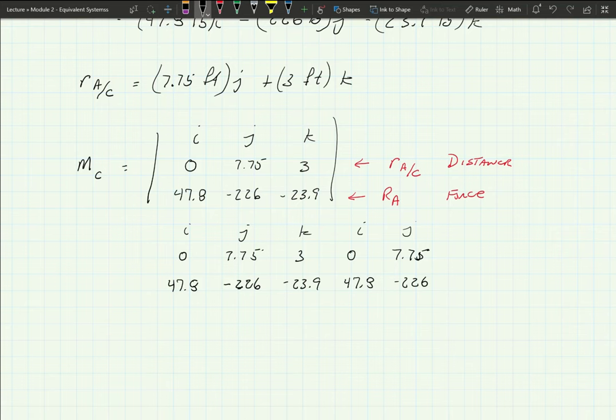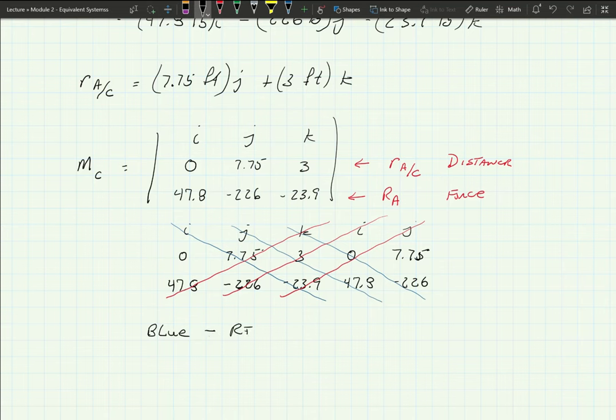So, I've done this a couple times, but I'm going to do it. Go this, go that, go there. Then minus, this, that. Whoops, they didn't turn red, did they? And that. So. Blue. Minus. Red. If that helps you at all doing this. And that'll get you to your moment of C.